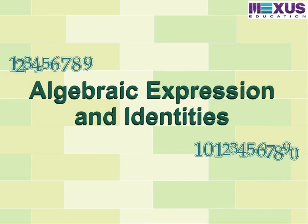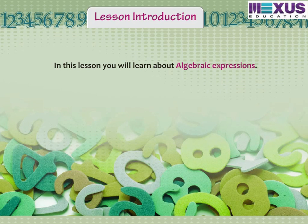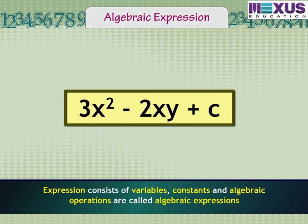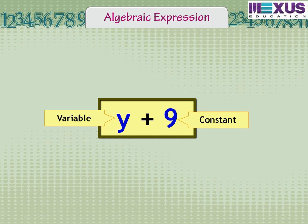Algebraic Expressions and Identities. In this lesson, you will learn about algebraic expressions. An expression consists of variables, constants, and algebraic operations. For example, in y plus 9, y is a variable, 9 is known as a constant, and the addition sign is called an operation. Many more expressions can be formed by using two or more variables.